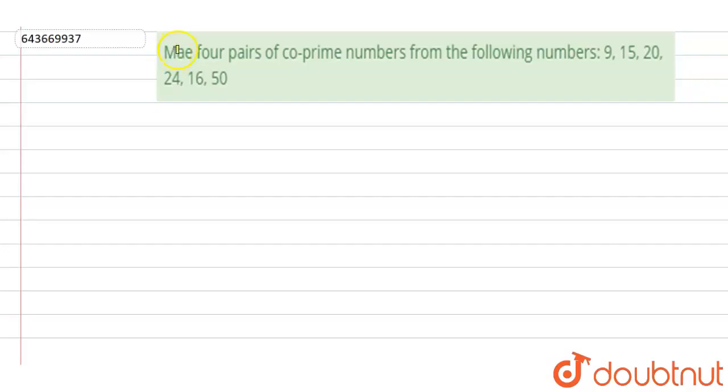Hi, let's start the question. The question says make four pairs of co-prime numbers from the following numbers: 9, 15, 20, 24, 16 and 50. So here we have to find which pairs are co-prime numbers.